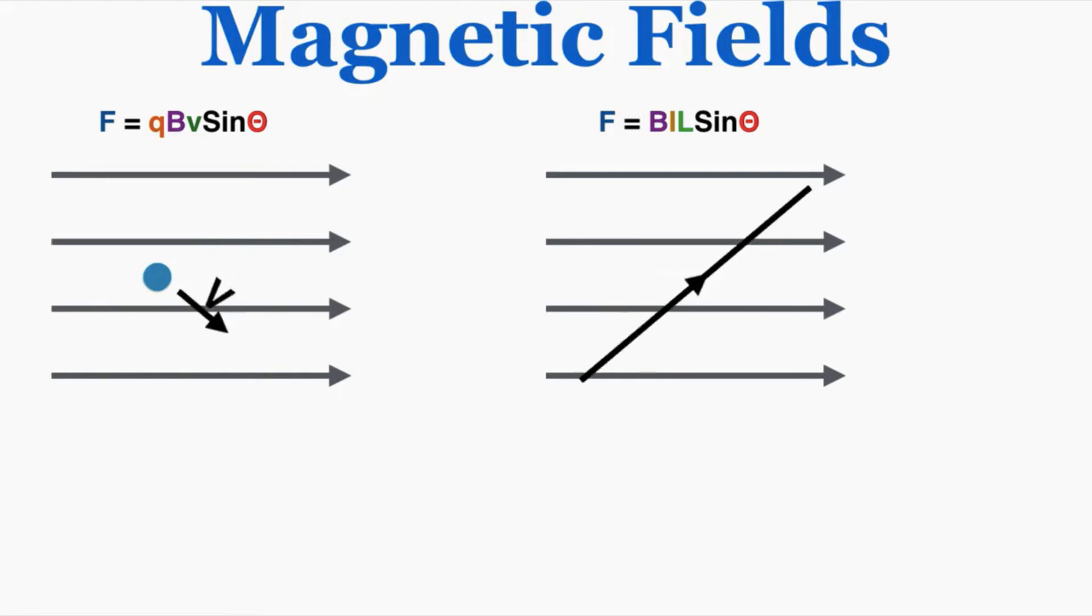However, if you move in a perpendicular direction to the field, the angle between the velocity and the field, and between the current and the field, is now 90 degrees. I know that 90 degrees is where sine is at a maximum of one, so the force is at a maximum if you're moving in a perpendicular direction to the field.